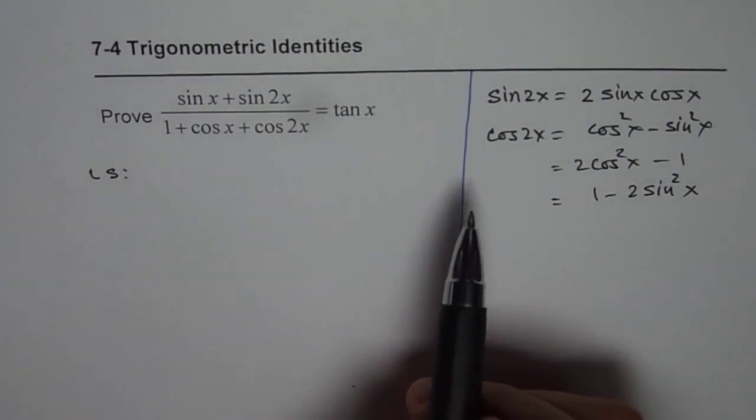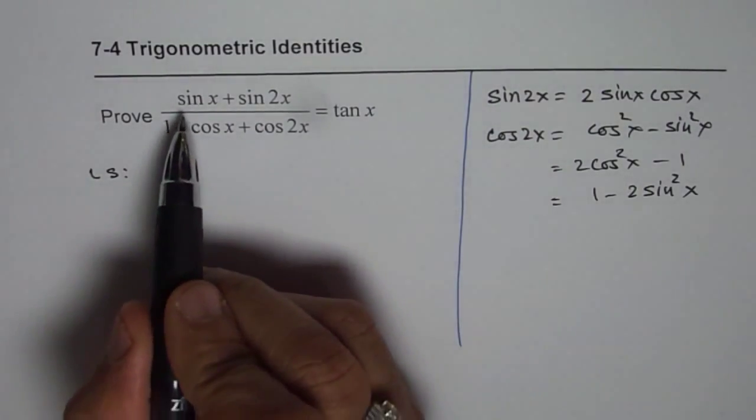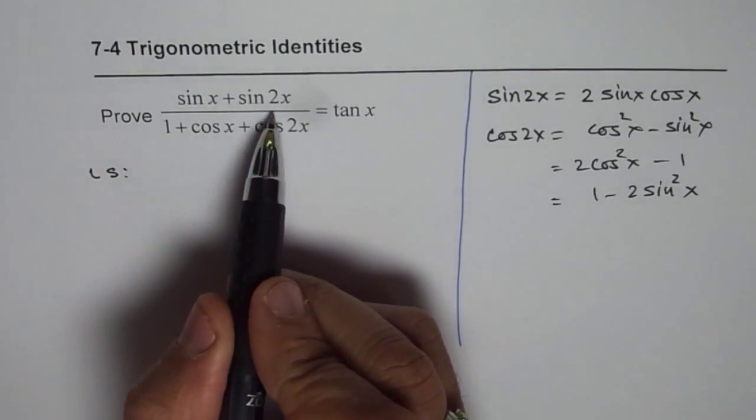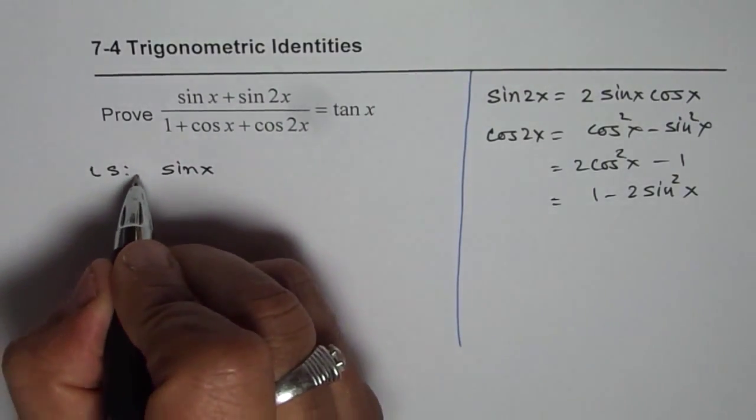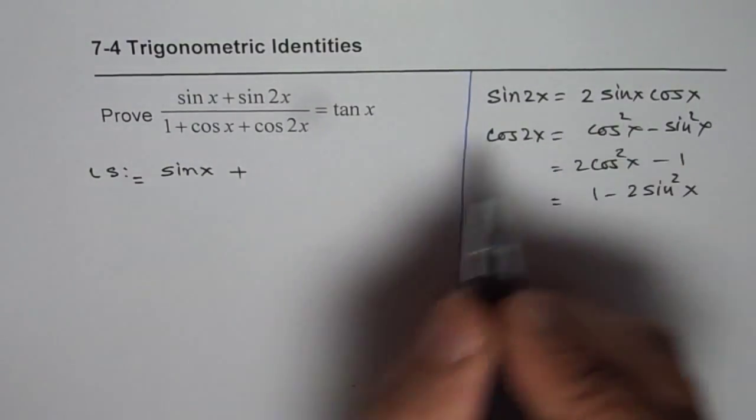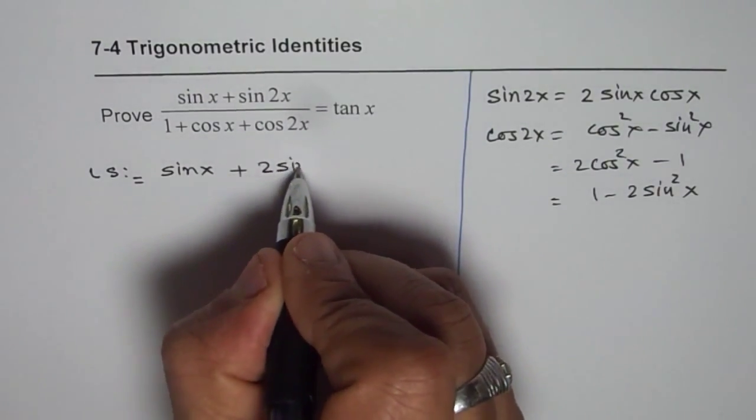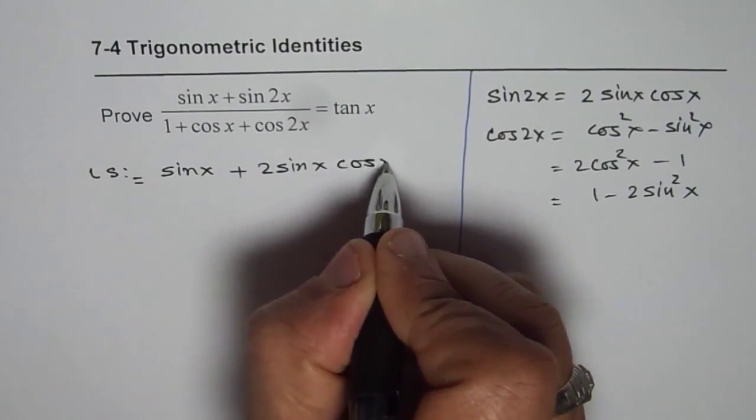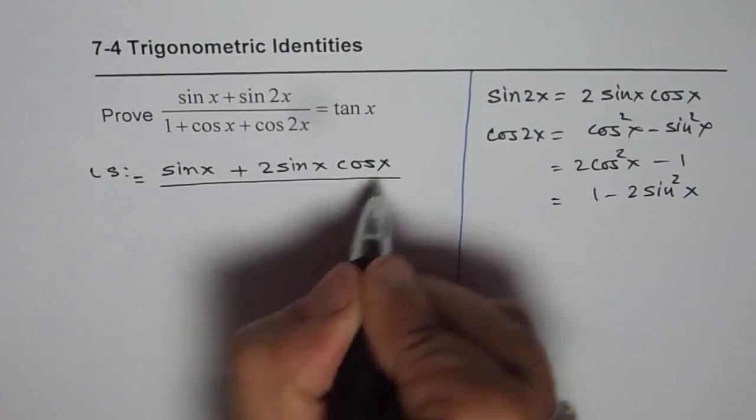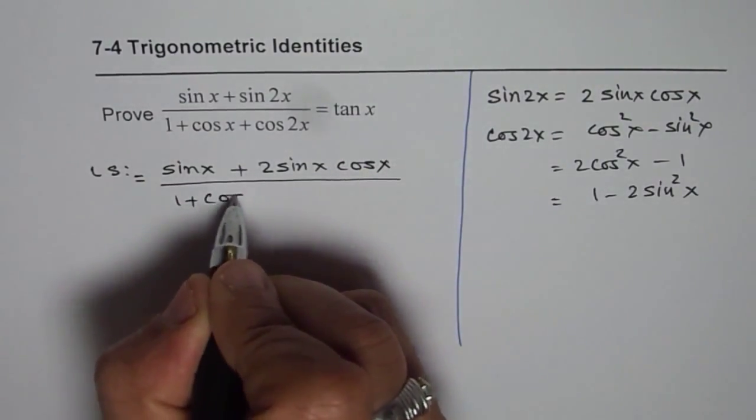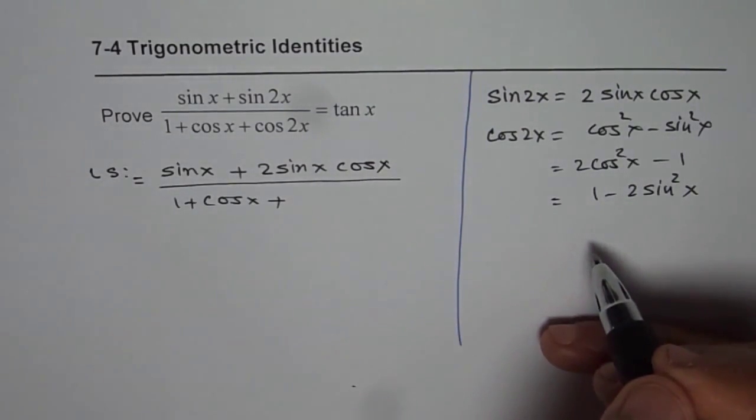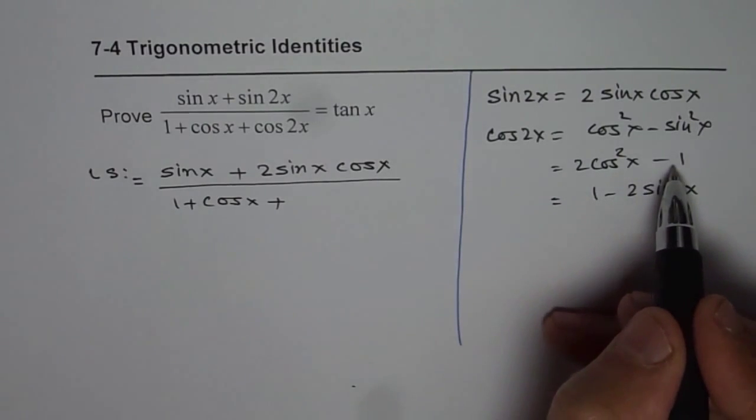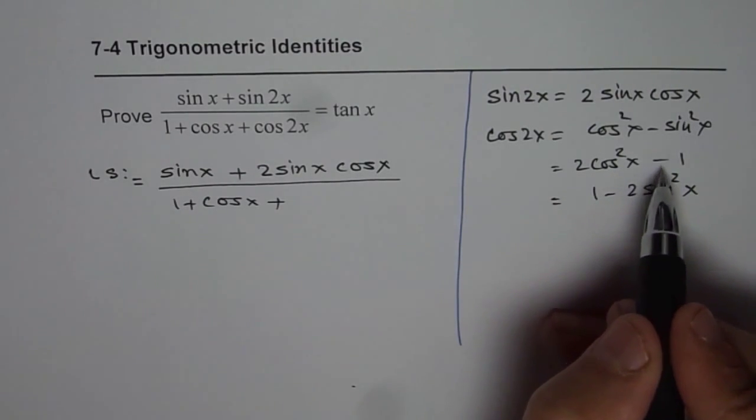Let us begin by simplifying the left side. It says sin x plus sin 2x. Left side is equal to sin x plus 2 sin x cos x divided by 1 plus cos x plus cos 2x. Now if I use 2 cos squared x minus 1, I do two things at the same time.